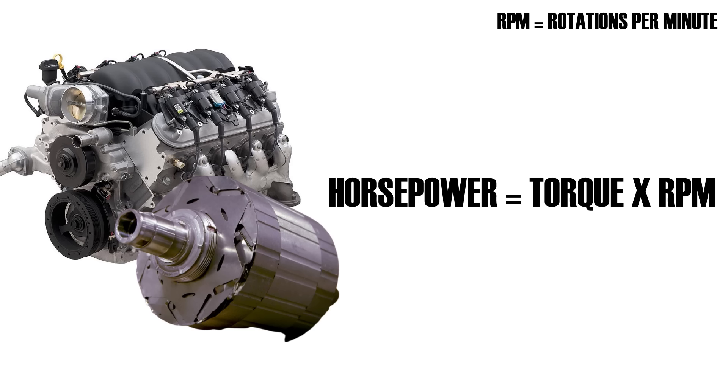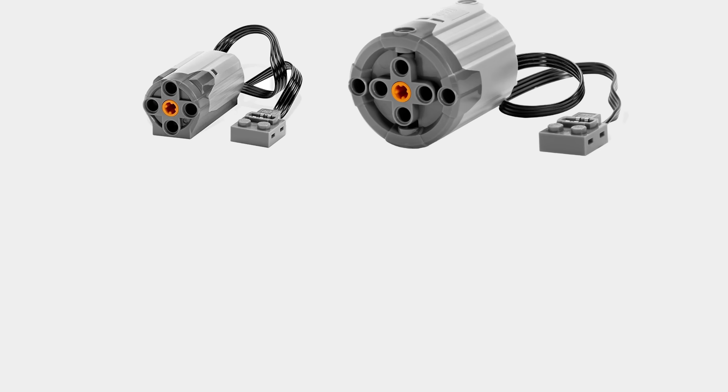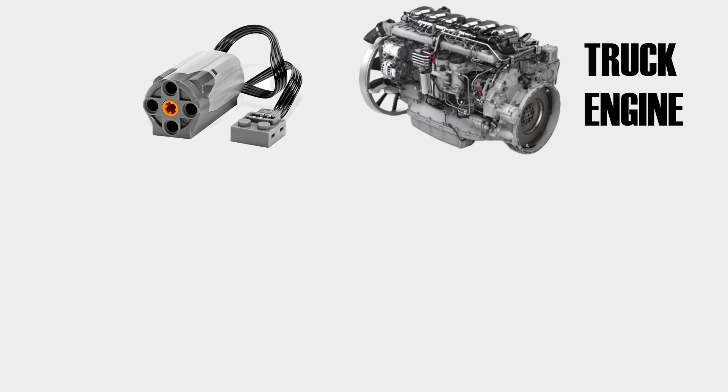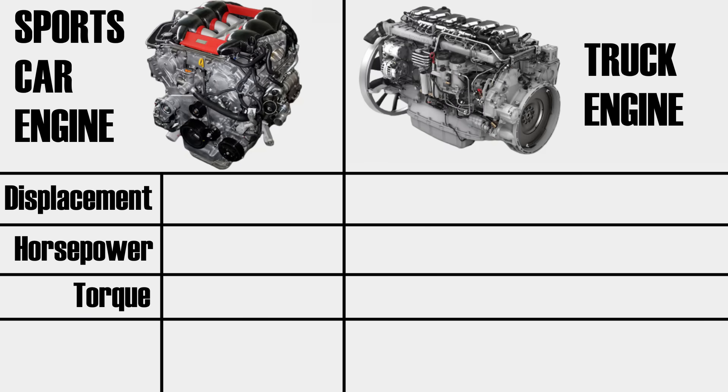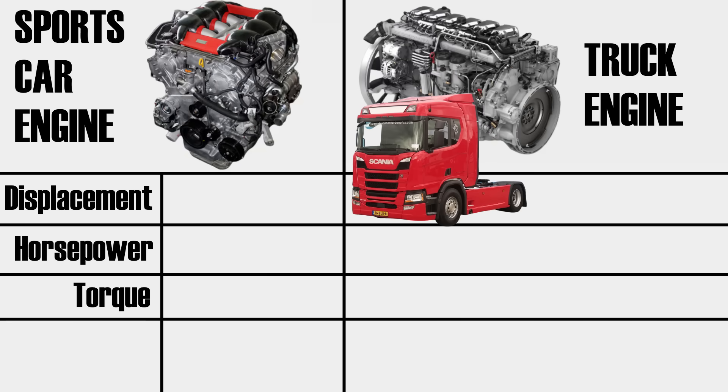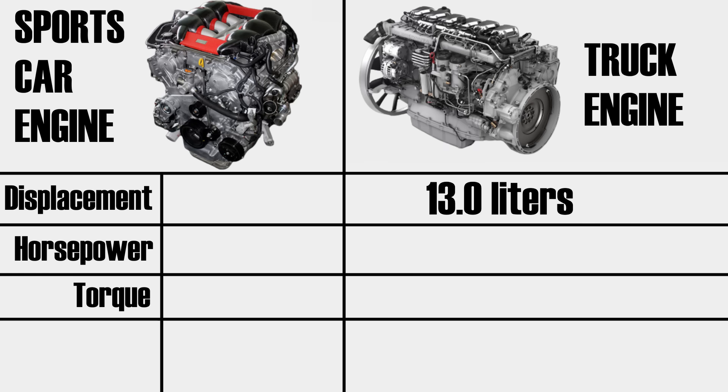Something else that's interesting is that our small and large motors are pretty analogous to a truck and a sports car engine. Truck engines are usually physically very large. A truck like this will typically have an engine with around 13 liters of displacement. And from an engine of this size, you can expect to get around 450 horsepower and around 2950 newton meters of torque. Really puts our LEGO motors into perspective, doesn't it?